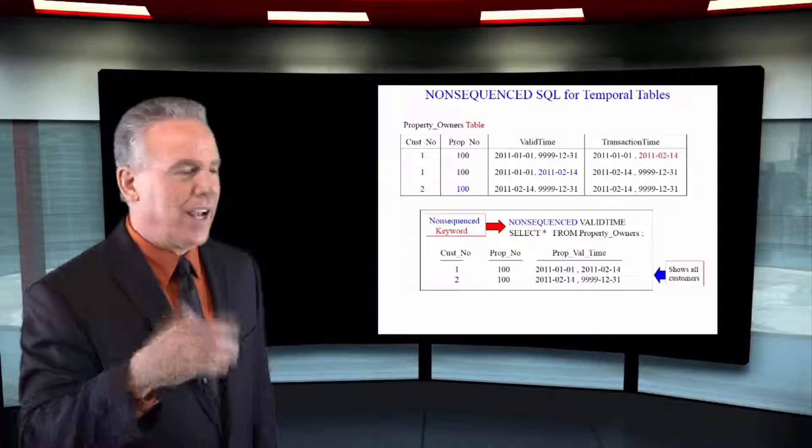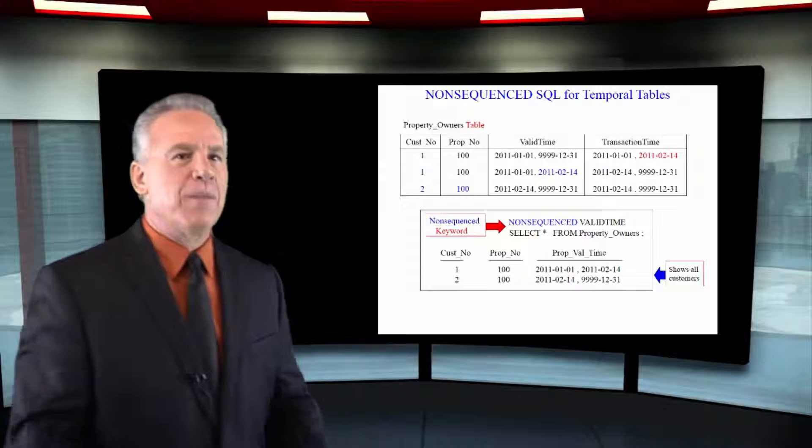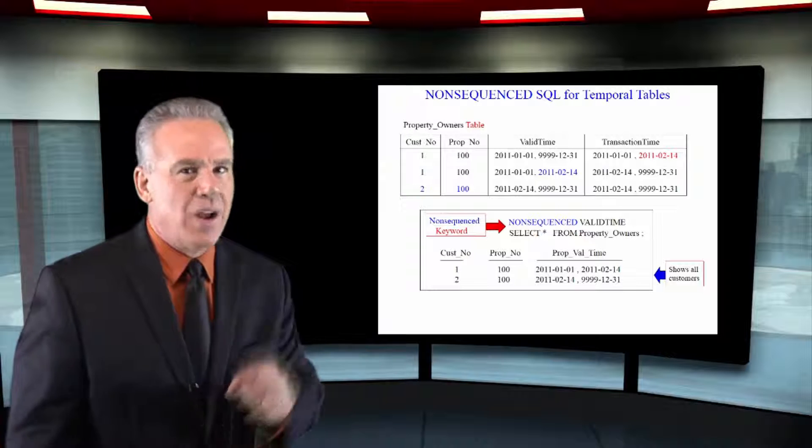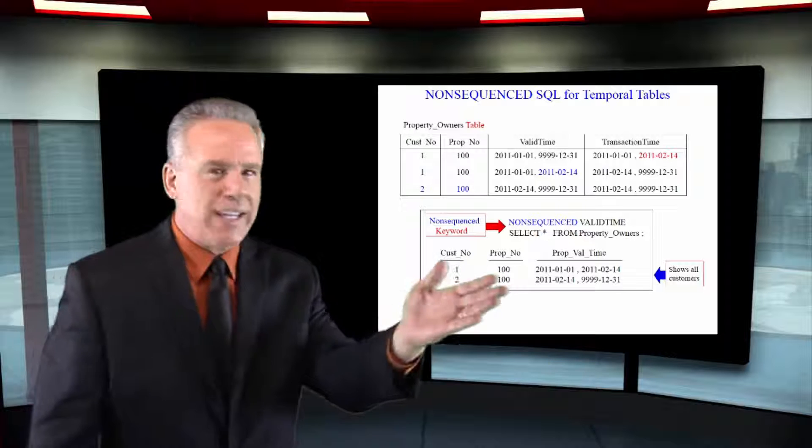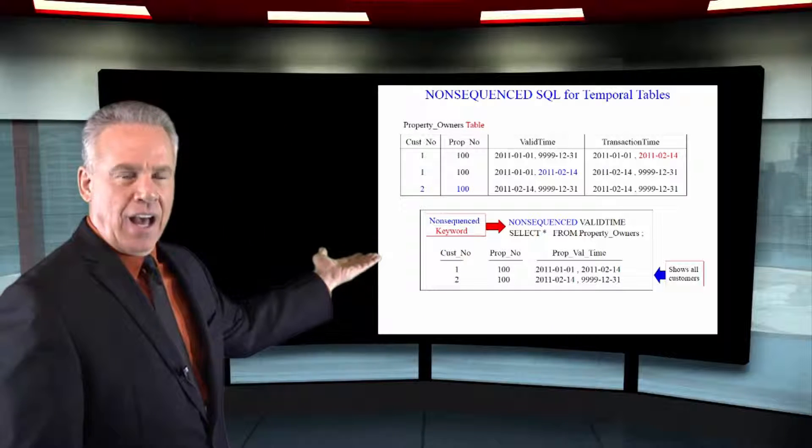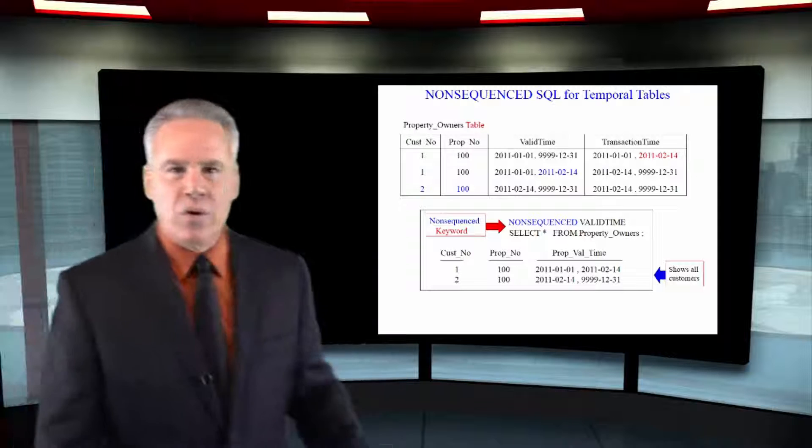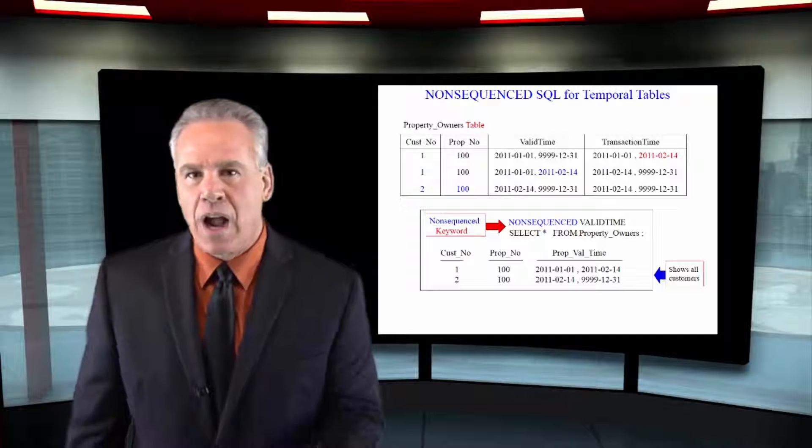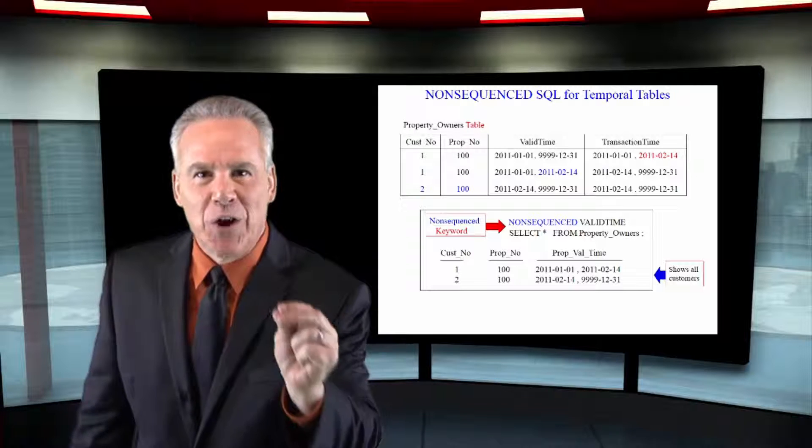Notice my SQL again to say select everything from the property owner's table, but in front of it I put keywords that say non-sequenced valid time. Those keywords say, you know what? I want you to read some of those closed rows.